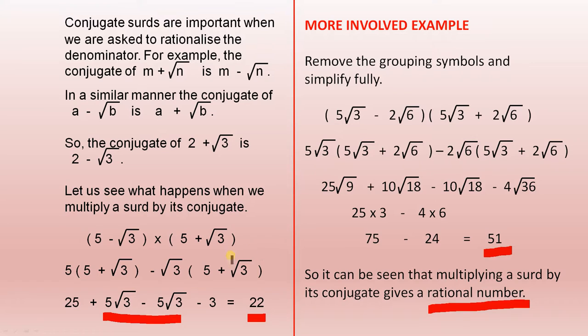Now I hope you realized this is the same as the product of a sum and difference, which gives you the difference of two squares. And that's why the answer always turns out to be a rational number.